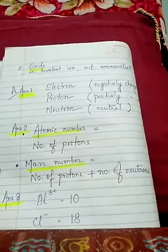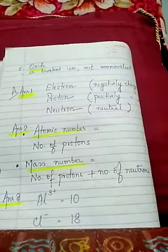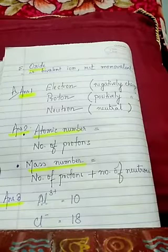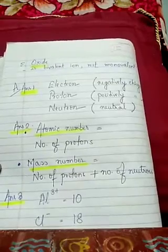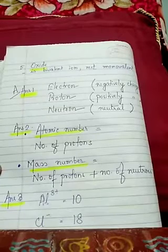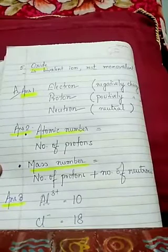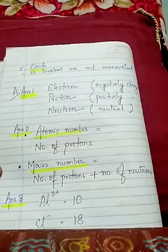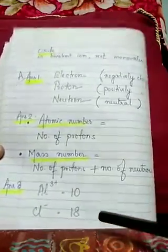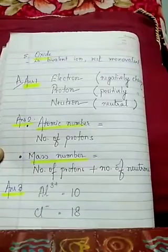Question number 3: the atomic numbers of aluminum and Cl are 13 and 17 respectively. What will be the number of electrons in Al³⁺ and Cl⁻? For Al³⁺, aluminum has atomic number 13 but it has given 3 electrons, so the number of electrons will be 10. For Cl⁻, atomic number is 17 but it has taken one electron, so it will have 18 electrons.